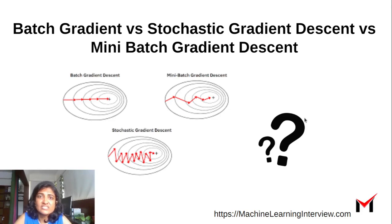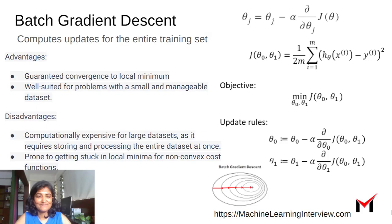Batch gradient descent versus stochastic gradient descent versus mini-batch gradient descent. So the regular gradient descent is often also called batch gradient descent.